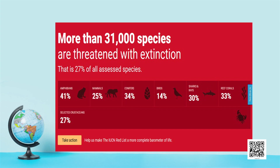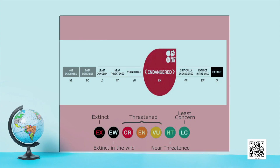The IUCN Red List of Threatened Species is the world's most comprehensive inventory of the global conservation status of plant and animal species. The Red List alarms that more than 31,000 species are threatened with extinction — that is 27 percent of all assessed species. IUCN uses a set of quantitative criteria to evaluate the extinction risk of species, relevant to most species and all regions of the world.